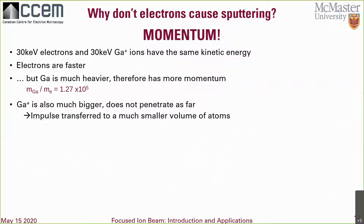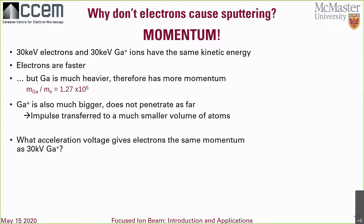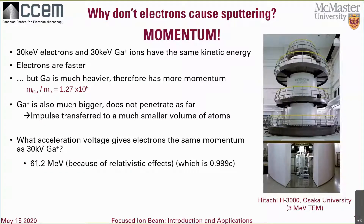For an electron to have the same momentum as a 30 kV gallium ion, it would need an acceleration voltage of 61 mega electron volts, which is really approaching the speed of light — that's 0.99 C. Just as an example, the biggest TEM I could find is 3 mega electron volts. So basically you'd put 20 of those in series to get a gallium ion's worth of momentum from an electron.